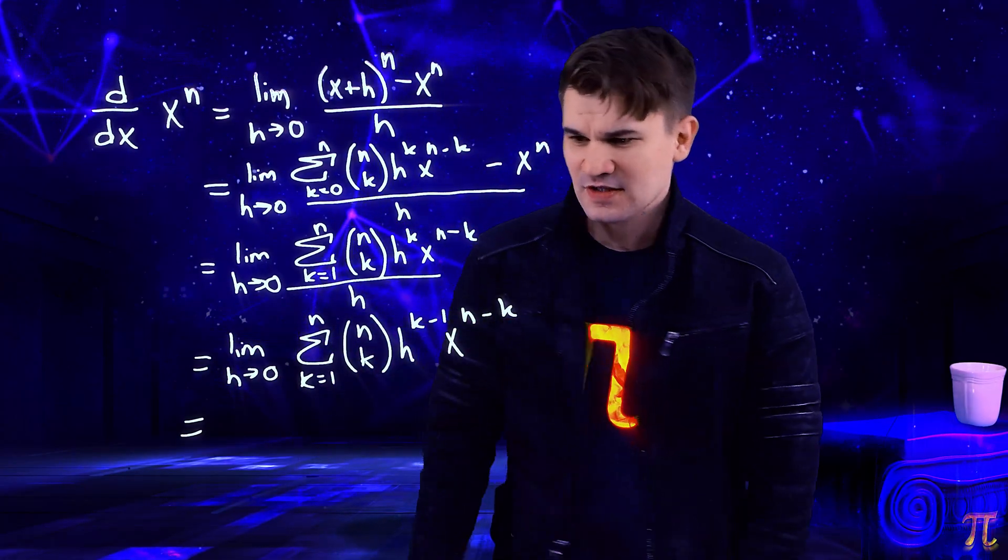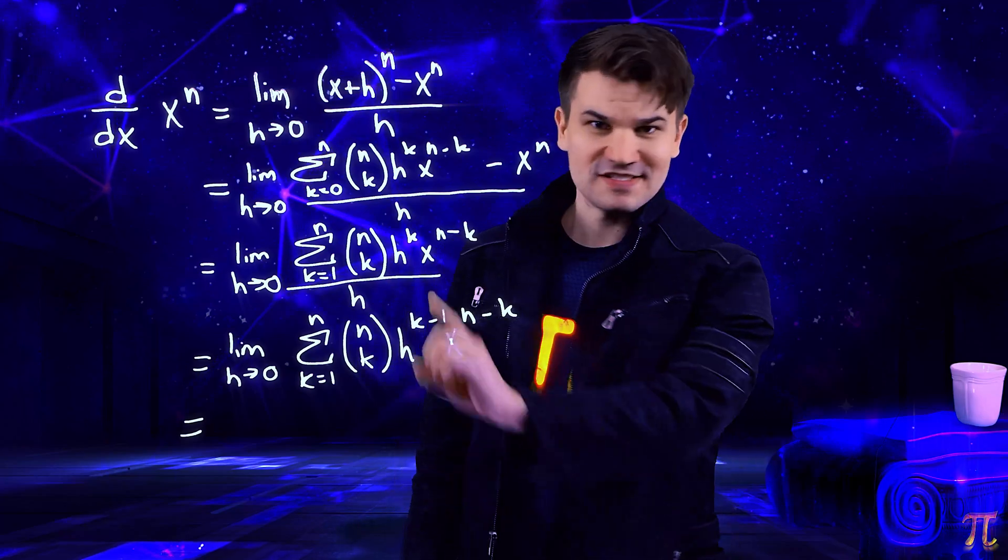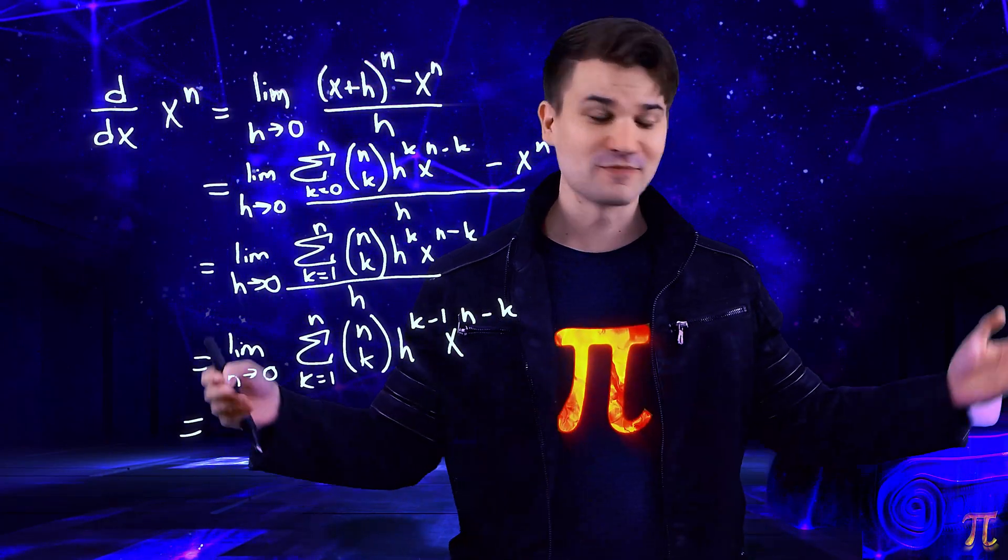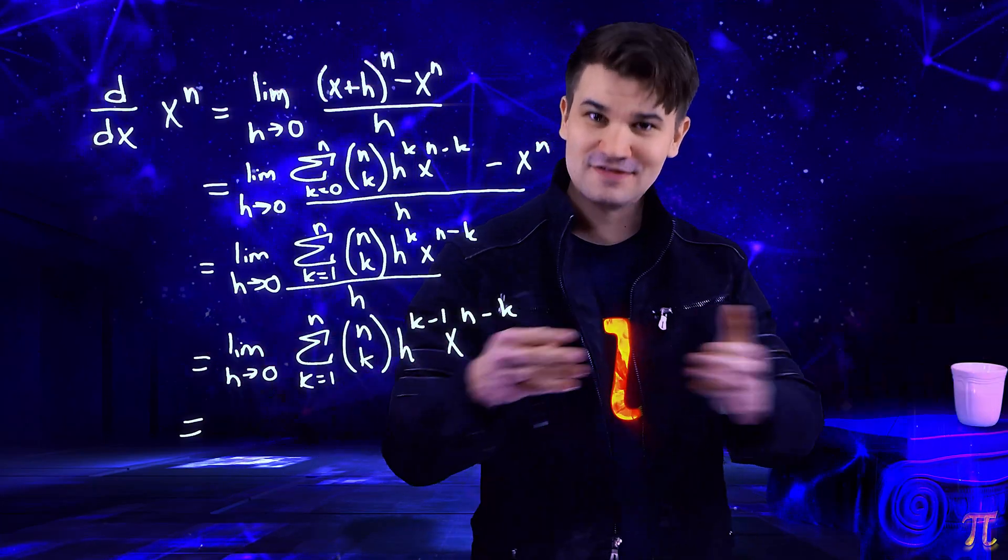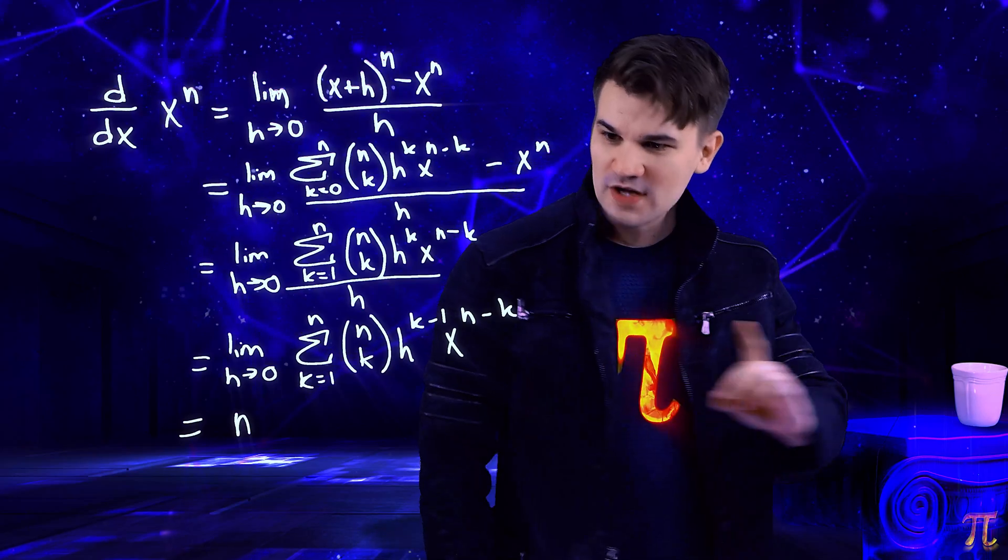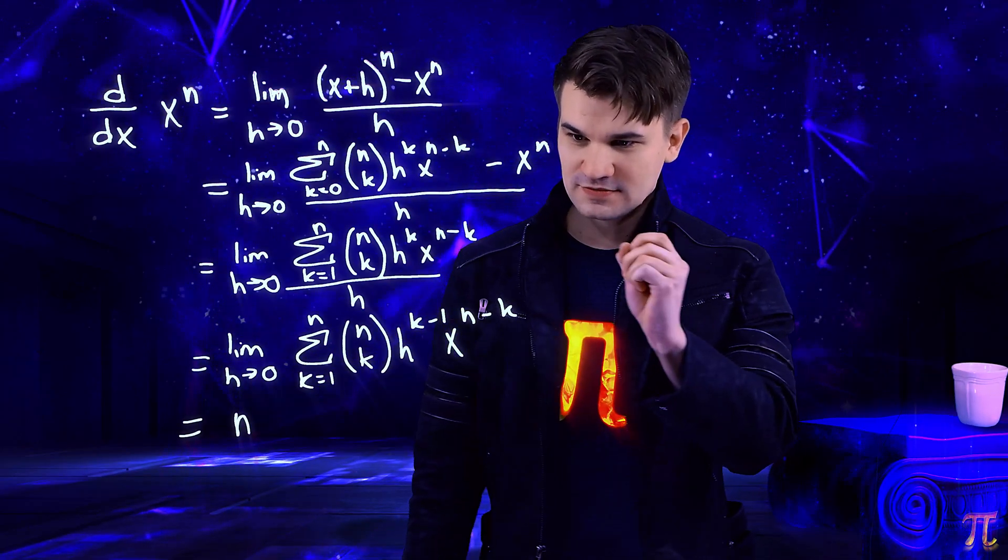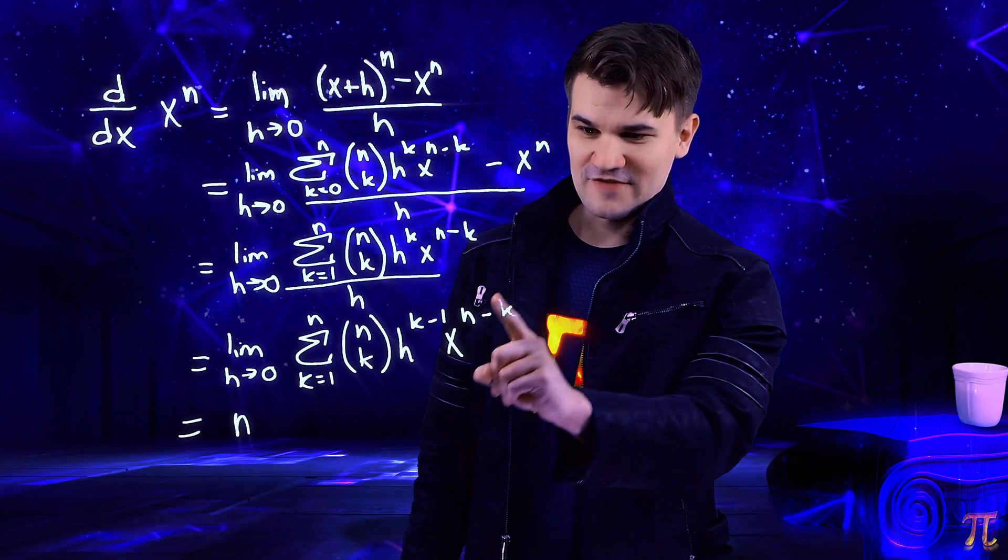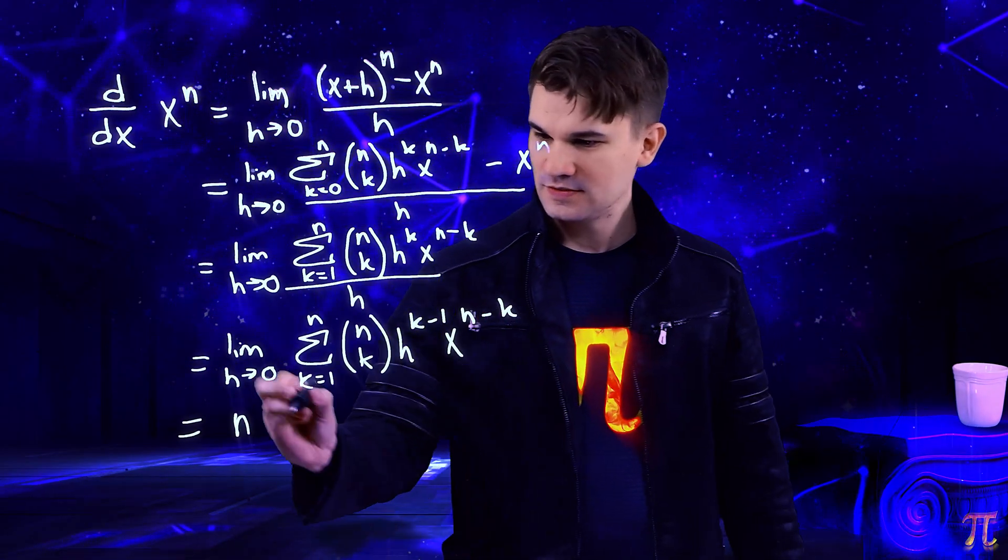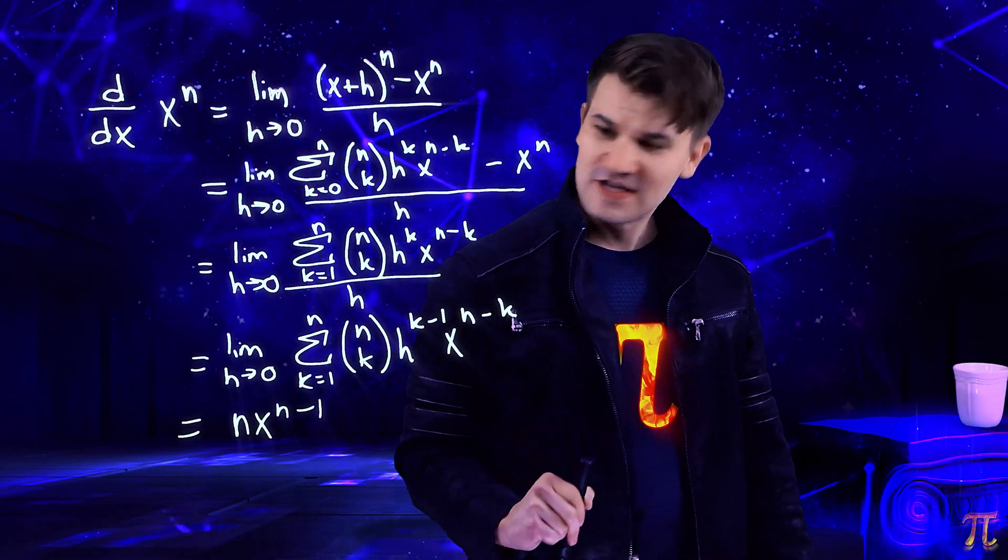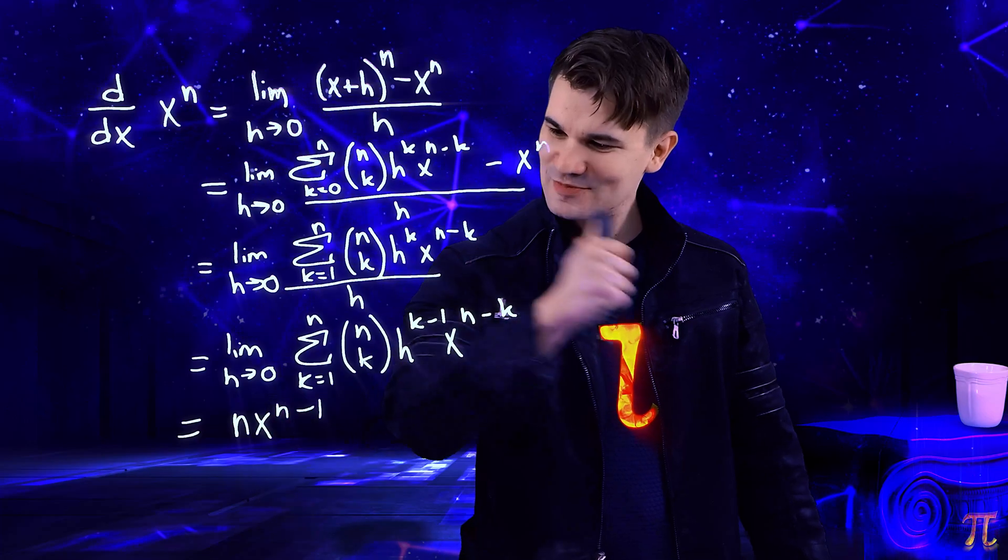So when k is one, what's n choose one? How many different ways can you select one thing from a set of n things? n different ways. So we have n, and k minus one is one minus one, so h to zero, which is one. Then we have x to the n minus one. We're done. That is the power rule: the derivative of x to the power of n equals n times x to the power of n minus one.